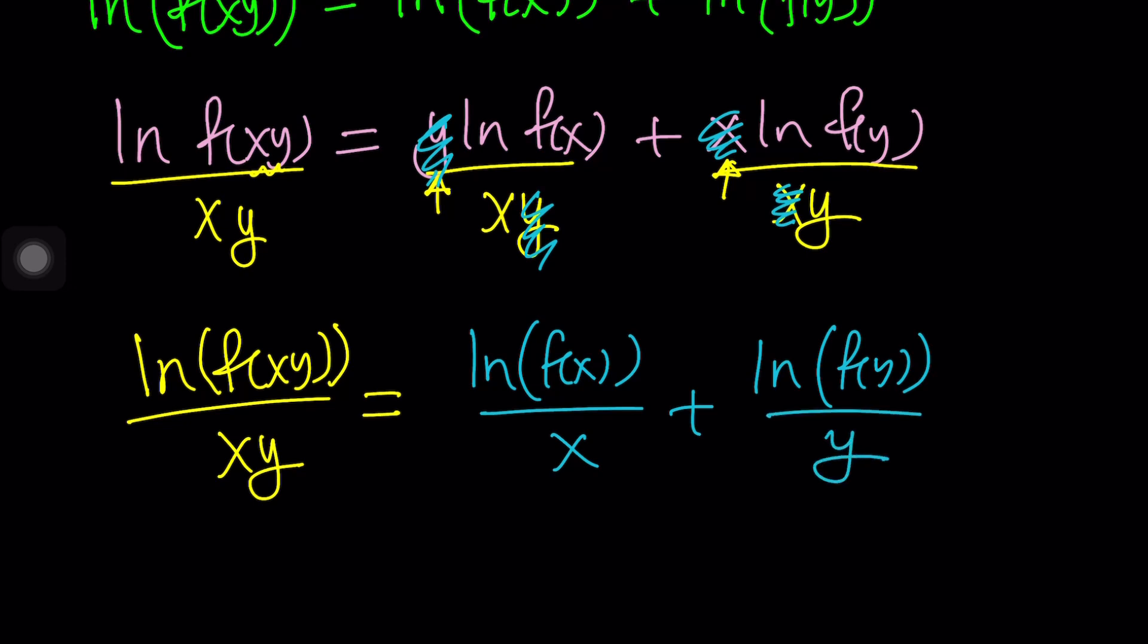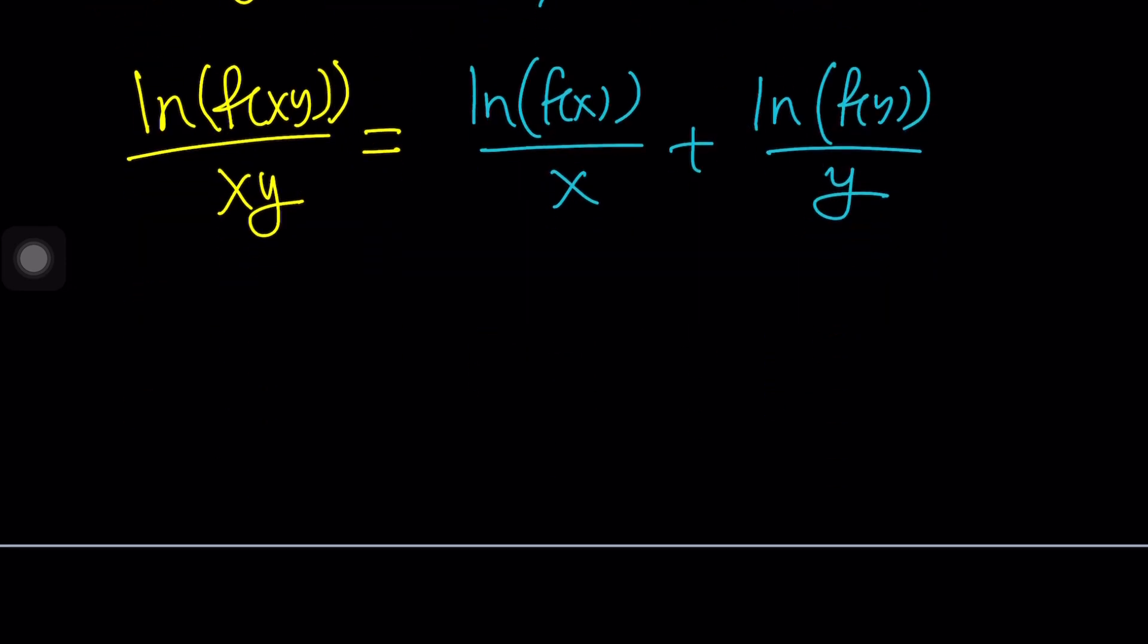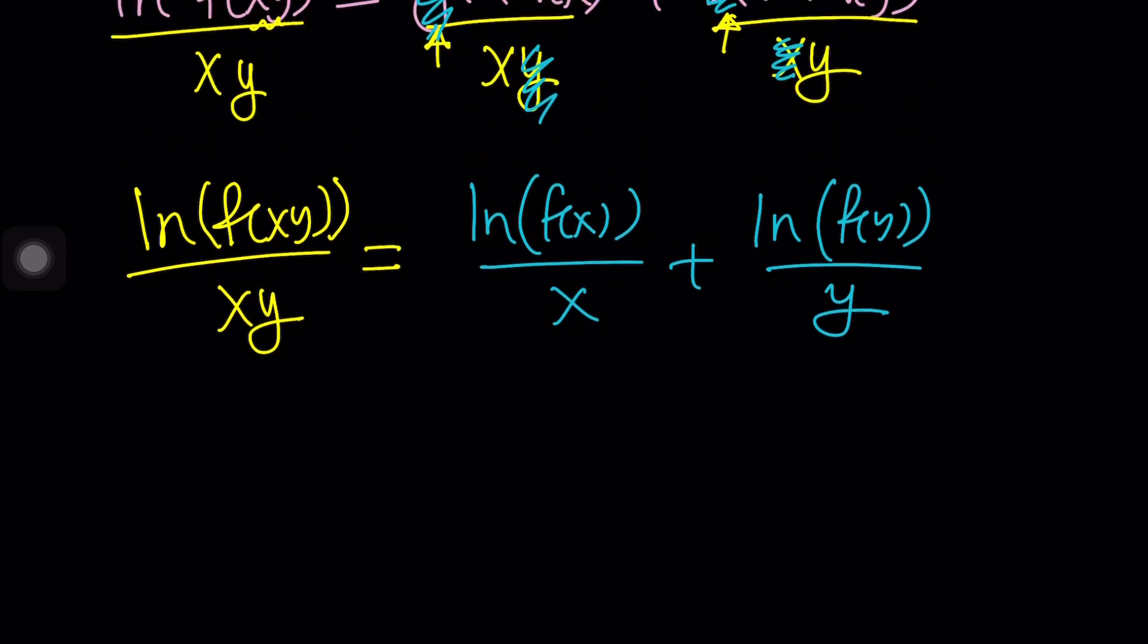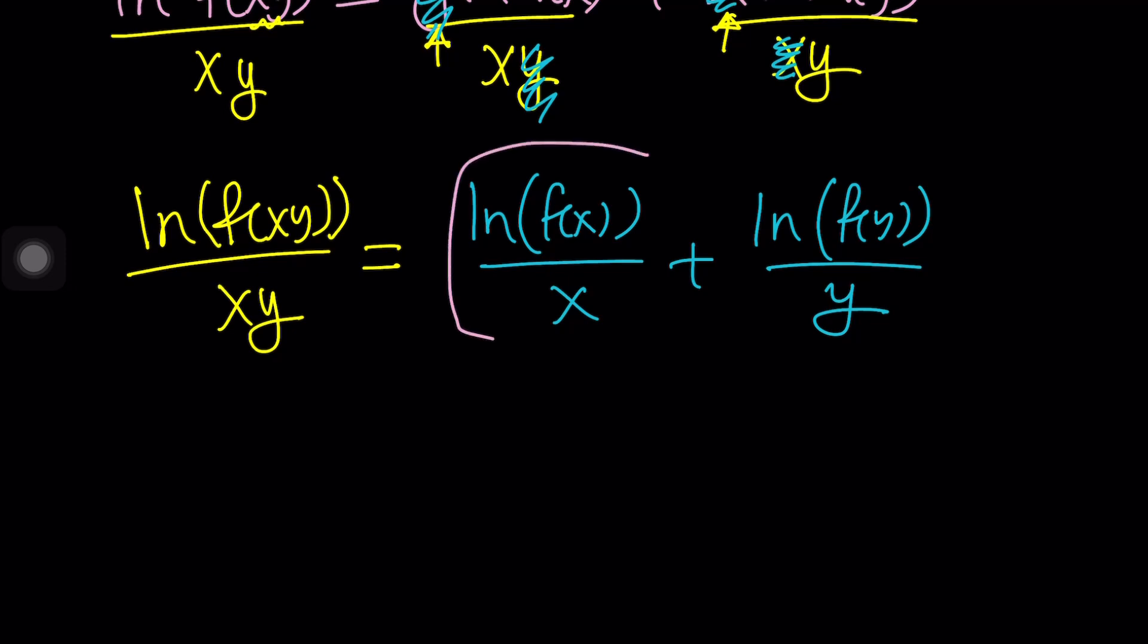And on the right-hand side, notice that the y cancels out. And here the x cancels out. Let's go ahead and clean them up. And now we have ln f of x divided by x plus ln f of y divided by y. This probably makes sense when I said, okay, I don't want x and y to be 0. I want x and y to be positive. That also makes sense because I want this from positive reals to positive reals because when you consider ln of f of x, obviously you want f of x to be greater than 0.